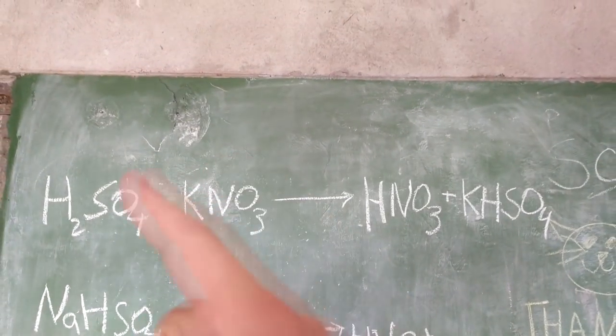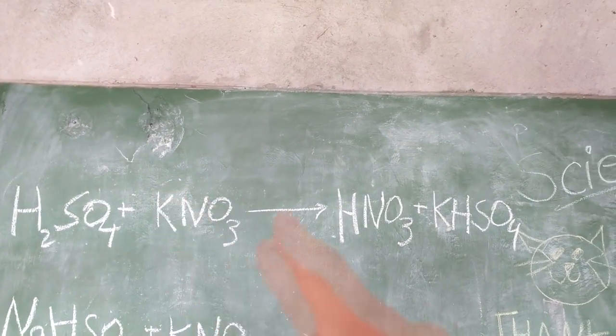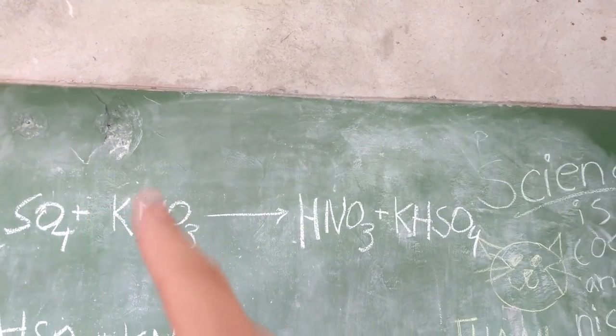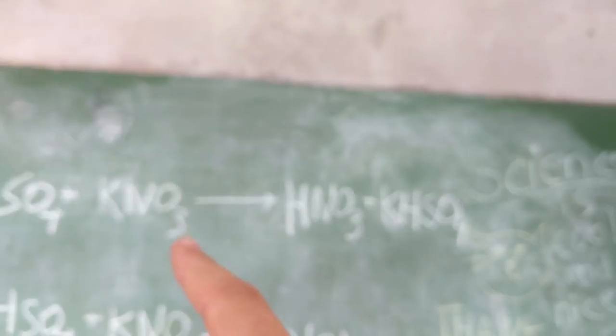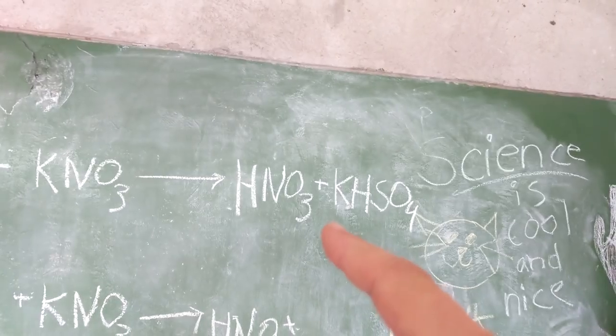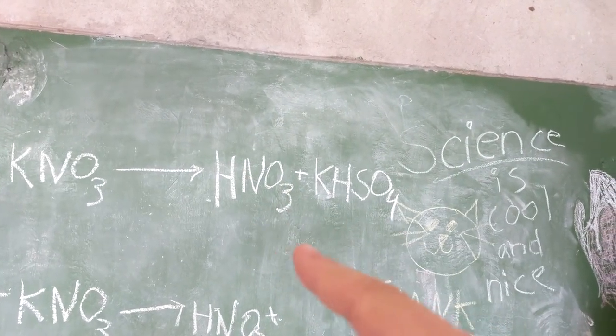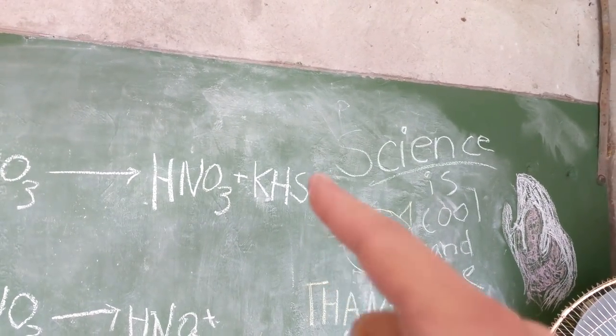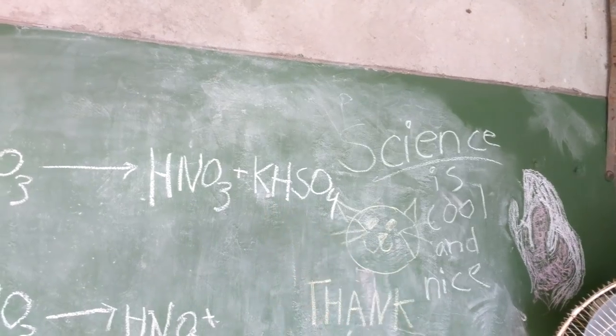So the usual way of making nitric acid is you take sulfuric acid and a nitrate salt, usually potassium nitrate or sodium nitrate, and that makes nitric acid which you boil off and you get potassium bisulfate left over, so potassium hydrogen sulfate.